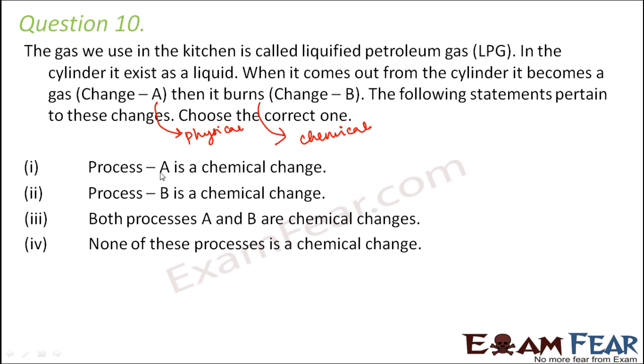Looking at the options: Process A is a physical change, not a chemical change. Process B is a chemical change — yes, that is correct.